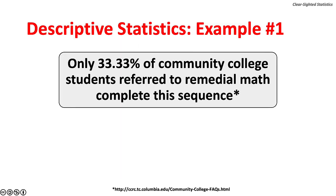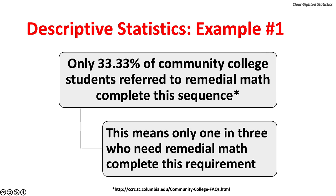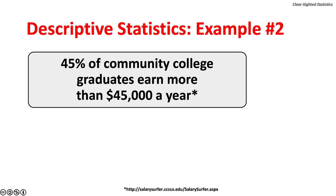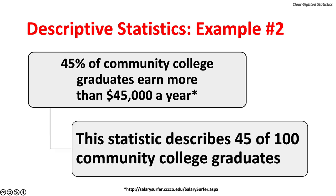Descriptive statistics example 1: Only 33.33% of community college students referred to remedial math complete this sequence — meaning only 1 in 3 students who need remedial math complete this requirement. Descriptive statistics example 2: 45% of community college graduates earn more than $45,000 a year, describing the annual income of 45 out of 100 community college graduates.